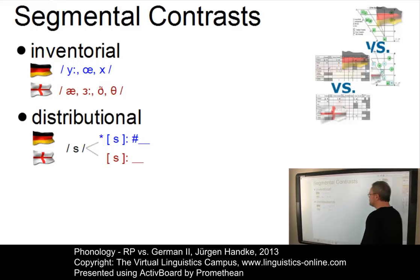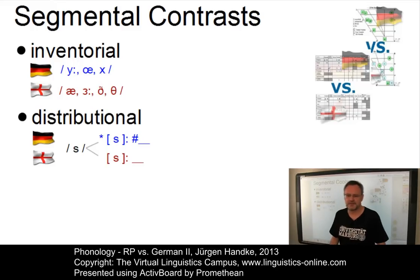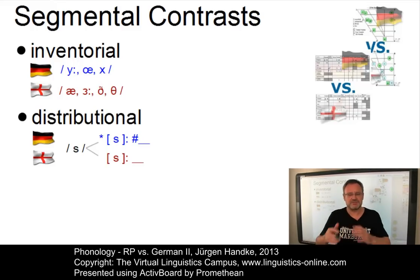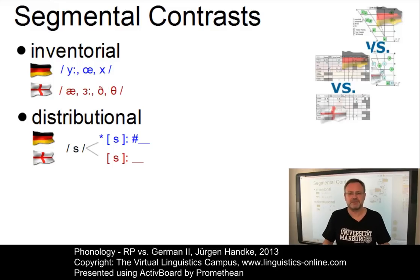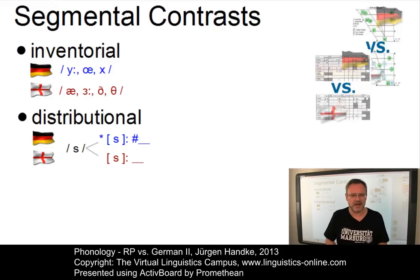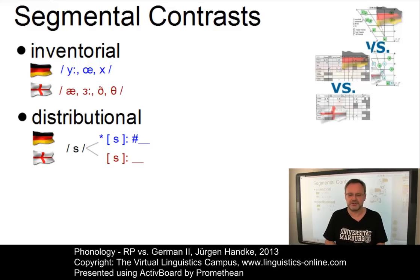Then there are distributional contrasts. Both languages have the same phoneme; however, their allophones are distributed differently. For example, the allophones of the alveolar fricative phoneme S in RP and in German.